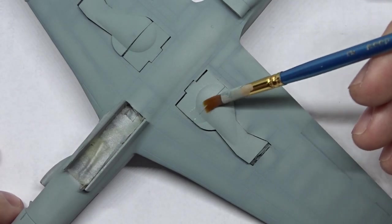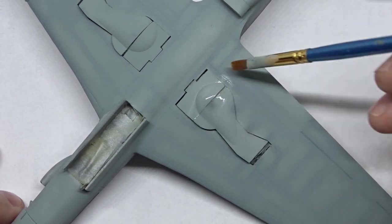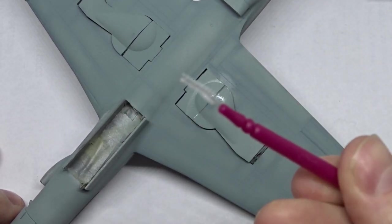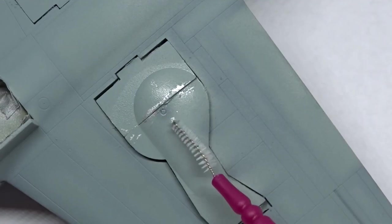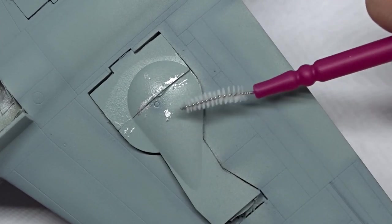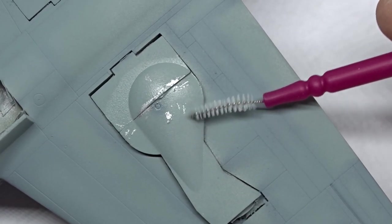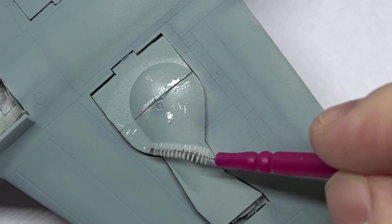Then it was time for the first chipping experiments. I just moistened certain areas and used this interdental brush to create small scratches. Of course this isn't very realistic on a plane that did not see much action, but I just wanted to give it a try.